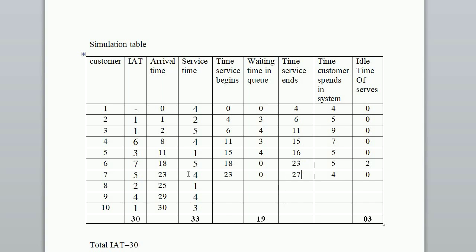For customer 8: arrival time is 25th minute, but the 7th customer finishes at 27th minute, so service begins at 27th minute. Waiting time is 27 minus 25 equals 2 minutes. Service time is 1 minute, so time service ends at 27 plus 1 equals 28th minute. Time customer spends in system is 2 plus 1 equals 3 minutes. Idle time of server is 0.